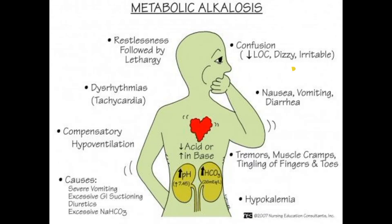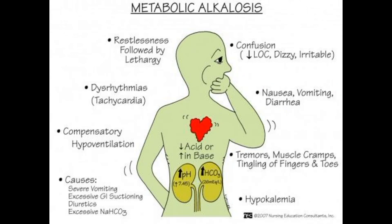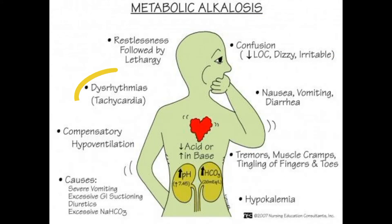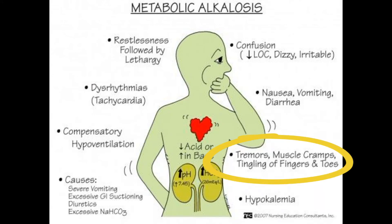For metabolic alkalosis we also use Triple H, but it stands for different things. Starting with the metabolic changes: nausea, vomiting, and also diarrhea. The Triple H here stands for: compensatory hypoventilation, hypokalemia, and haziness — which relates to confusion, reduced level of consciousness, dizziness, and irritability. You also get tachycardia and neurological symptoms like tremors, muscle cramps, and tingling.